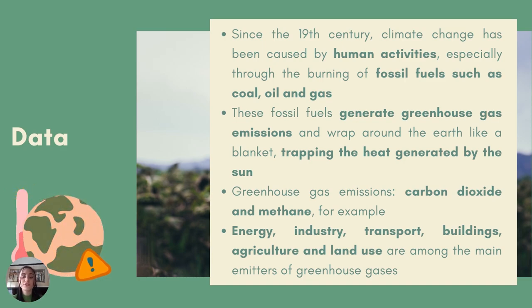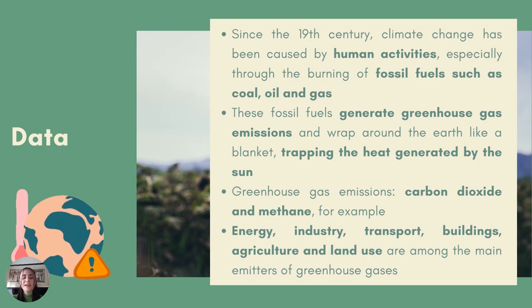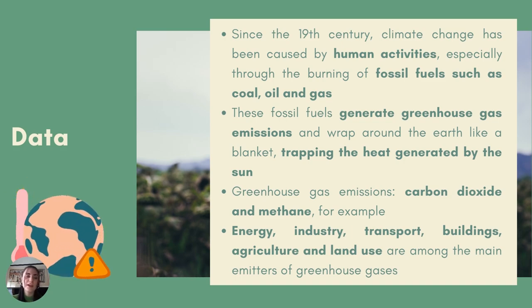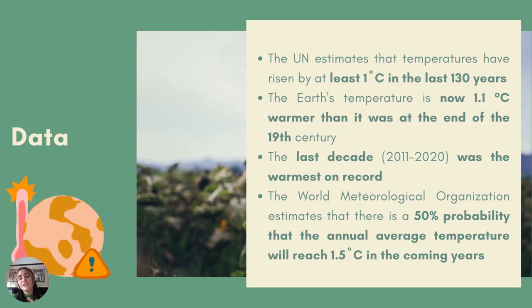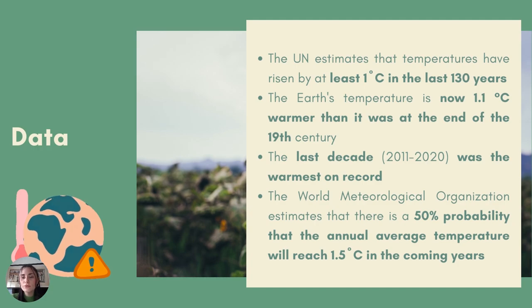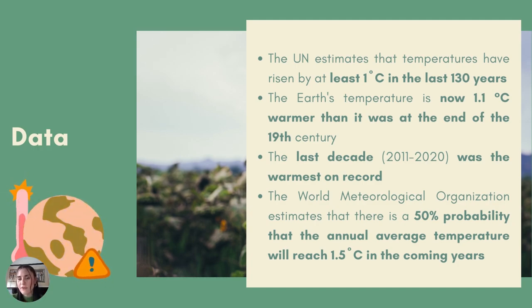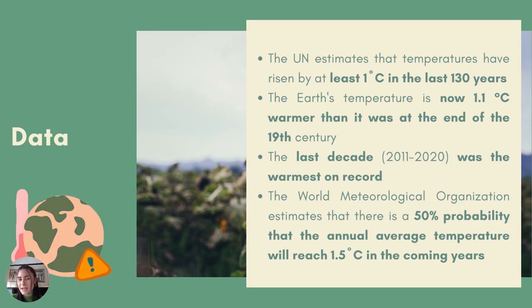Examples of greenhouse gas emissions that cause climate change are carbon dioxide and methane. These are produced, for example, by the use of petrol for driving, or the use of coal to generate heat in a building or house. Just 30 years ago, it was only environmental scientists who talked about climate change, but today we all know and suffer from its effects. Our planet's climate is changing drastically.